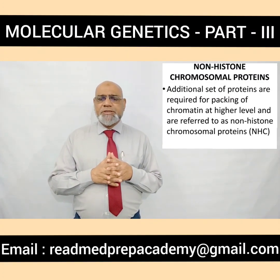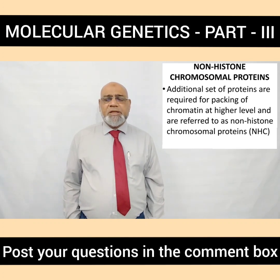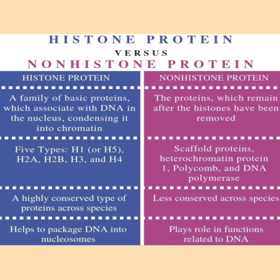Non-histone chromosomal proteins (NHC proteins) are an additional set of proteins required for packaging of chromatin at a higher level. Histone proteins are a family of basic proteins associated with DNA in the nucleus, condensing DNA into chromatin, whereas non-histone proteins remain after histones are removed and are used in packaging. Five types of histone proteins are present: H1, H2A, H2B, H3 and H4. Non-histone proteins include scaffold proteins, heterochromatin protein 1, polycomb, and DNA polymerase. Histone proteins are highly conserved across species; non-histone proteins are less conserved.